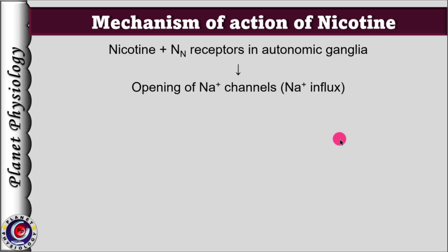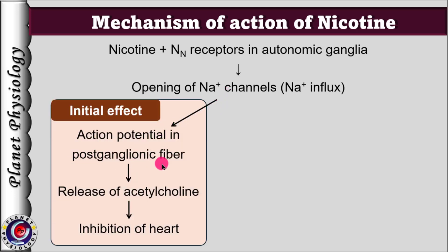Binding of nicotine with nicotinic receptors opens ligand-gated sodium channels, leading to sodium influx. This generates action potentials in the postganglionic fibres. As the impulses reach the nerve terminal, they cause release of acetylcholine at the cardiac muscle. This acetylcholine acts on muscarinic receptors on the heart, leading to decrease in heart rate and force of contraction.